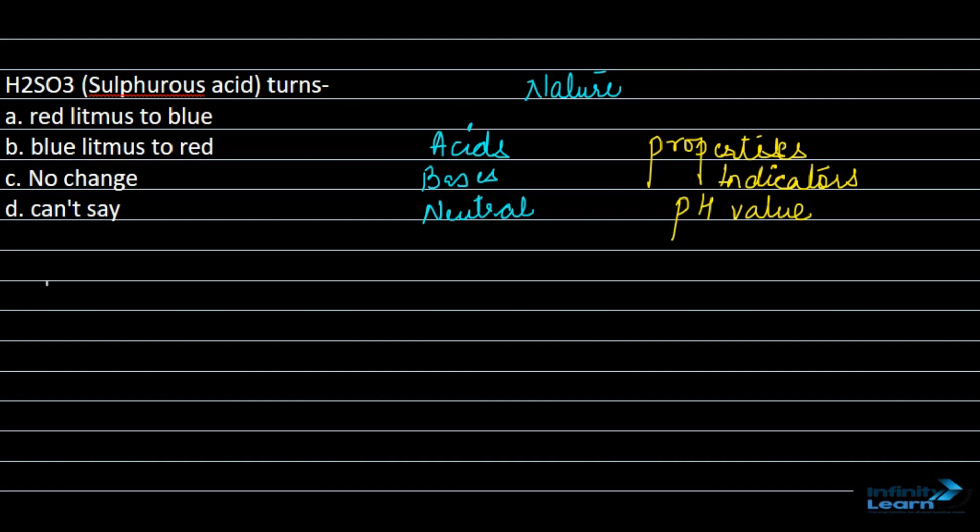Indicators are basically those substances which, when treated with any acid or a base, bring about a change in their color or in their smell when they are treated with acids or bases.